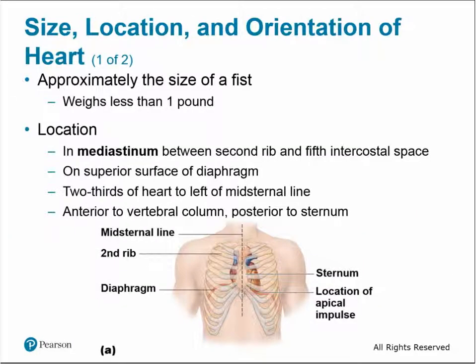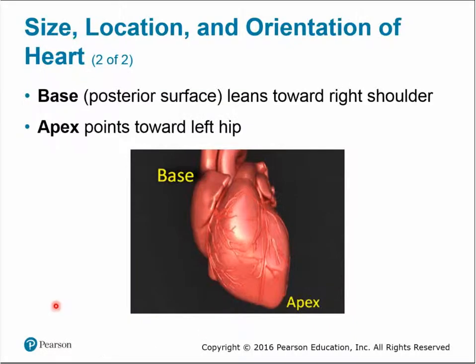The heart's general size, location, and orientation: it's approximately one pound in weight, about the size of a fist. It's located in the mediastinum between the second rib and the fifth intercostal space. Two-thirds of the heart actually lie to the left of the mid-sternal line, so it's not directly in the center of the chest. It's anterior to the vertebral column but posterior to the sternum. The base of the heart is the posterior surface facing toward the right shoulder, and the apex is the tip at the bottom pointing toward the left hip.